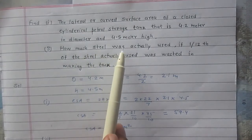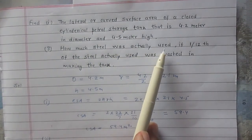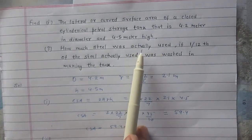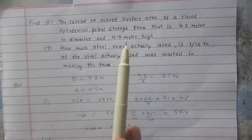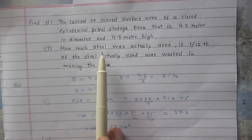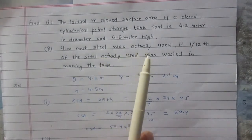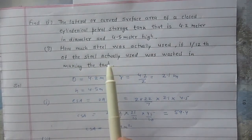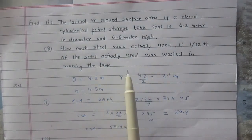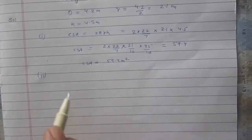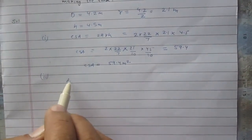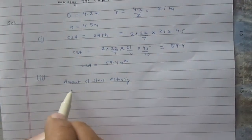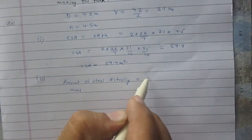Students sometimes get confused about what 'steel actually used' means. The term 'actually used' means the amount of steel — or area of steel — that was actually purchased. We are given that one-twelfth of this steel actually used, or actually purchased, was wasted in making the tank. So the amount of steel actually used is equal to the useful steel.